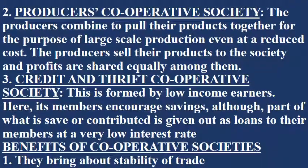Producers' cooperative society: the producers combine to pool their products together for the purpose of large-scale production, even at a reduced cost. The producers sell their products to the society and profits are shared equally among them. Credit and thrift cooperative society: this is formed by low income earners. Here its members encourage savings, although part of what is saved or contributed is given out as loans to their members at a very low interest rate.